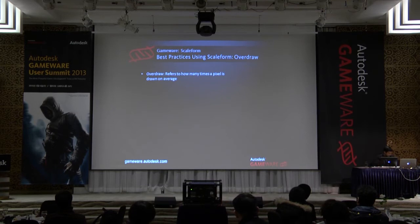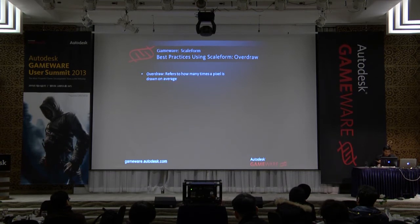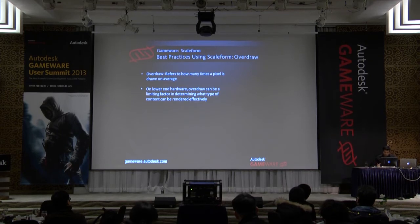The next topic is overdraw. Overdraw refers to how many times a pixel is drawn on average. You want overdraw to be as low as possible, because every time a pixel is drawn, that's wasted work by the renderer. Overdraw can be a limiting factor on lower-end hardware, like the iPhone 4, or any older-generation hardware that is fill-rate limited.